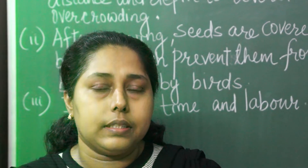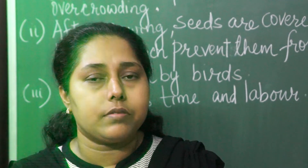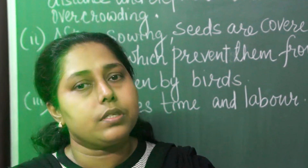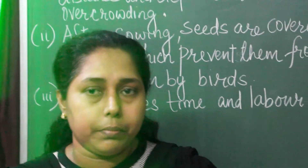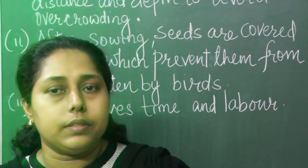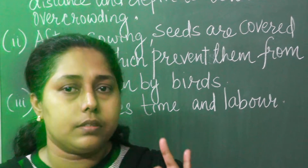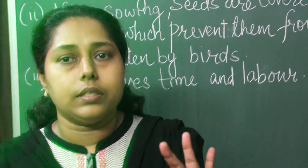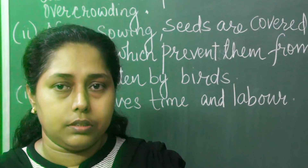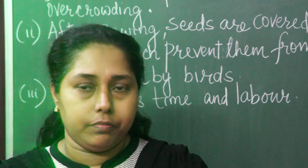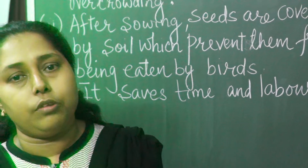We already covered crop production in the first video, where we studied about the different types of crops. Through the second video, we started the basic agricultural practices: first, preparation of the soil; second, sowing; third, adding manure and fertilizers; fourth, irrigation; fifth, protection from weeds; sixth, harvesting; and seventh, storage of grains.